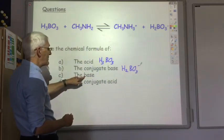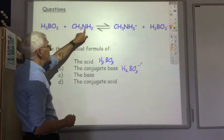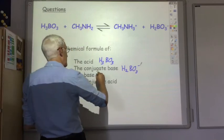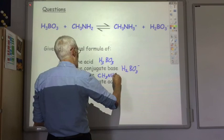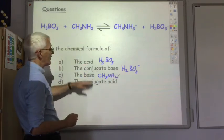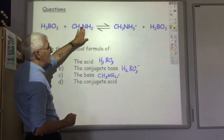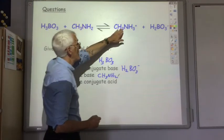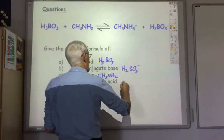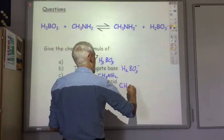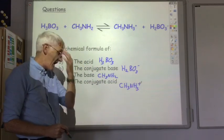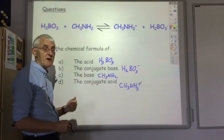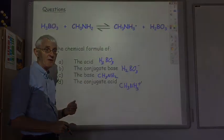What's accepting the proton? CH3NH2 accepts the proton. And the conjugate acid is what it turns into once it's accepted the proton, which is CH3NH3+. And you'll get a chance to practice some more of those questions in your next exercise file.